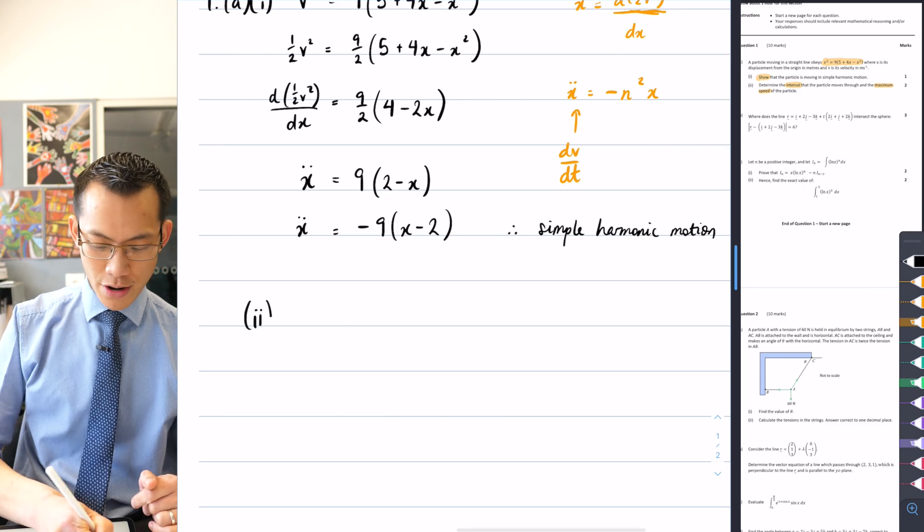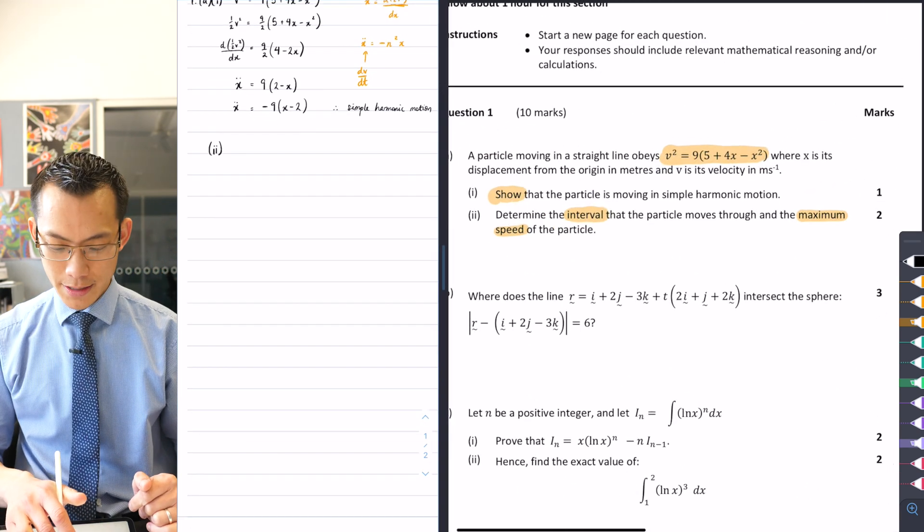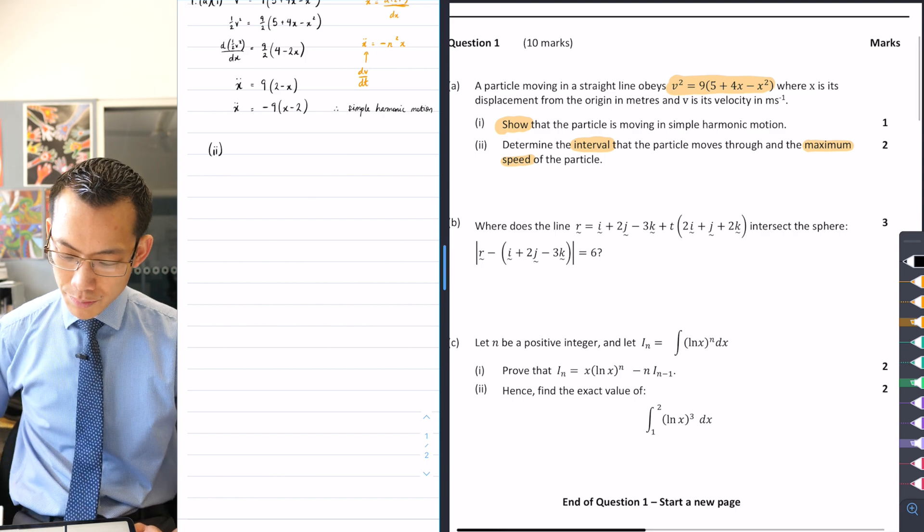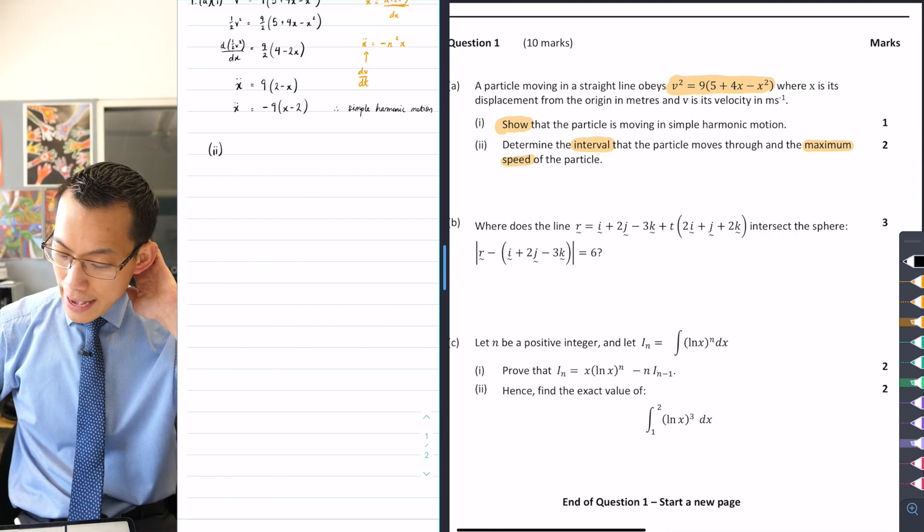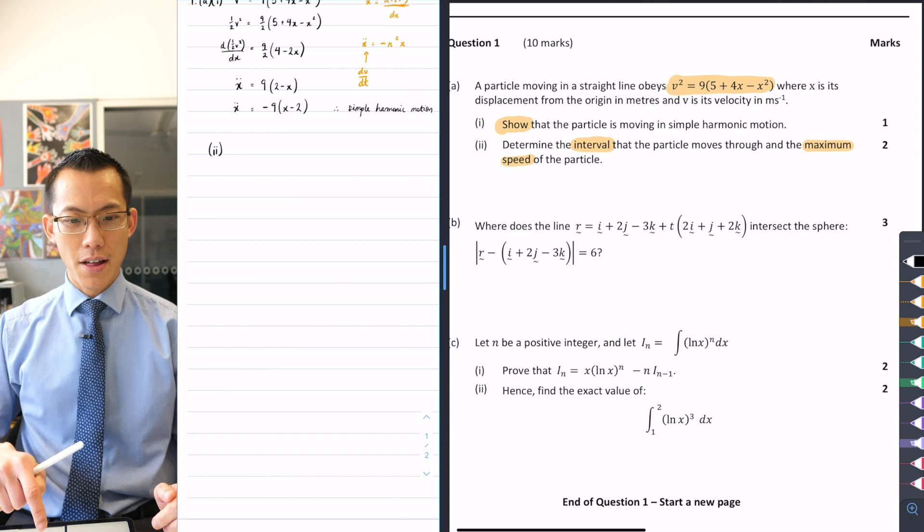Part two, let's just refresh our memory and see what we needed to find. Part two, determine the interval that the particle moves through and the maximum speed of the particle.